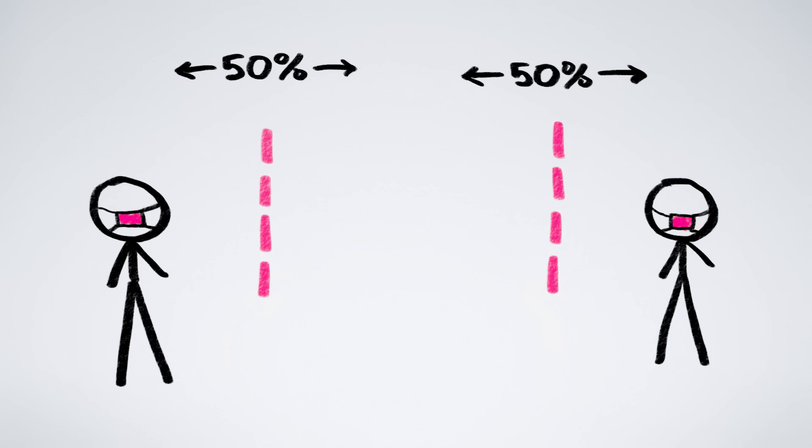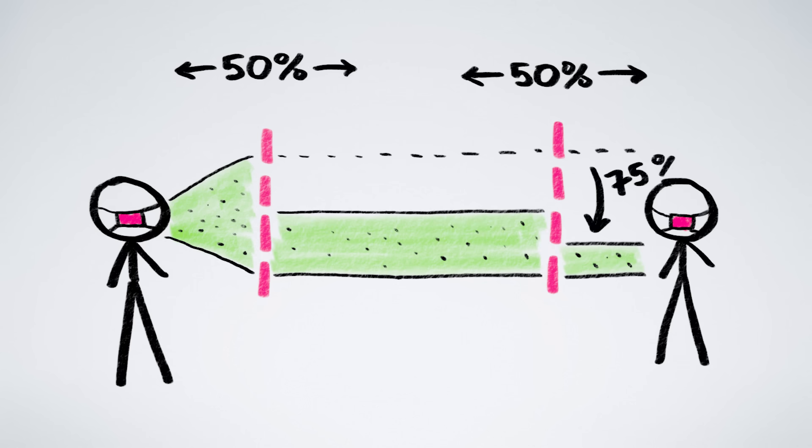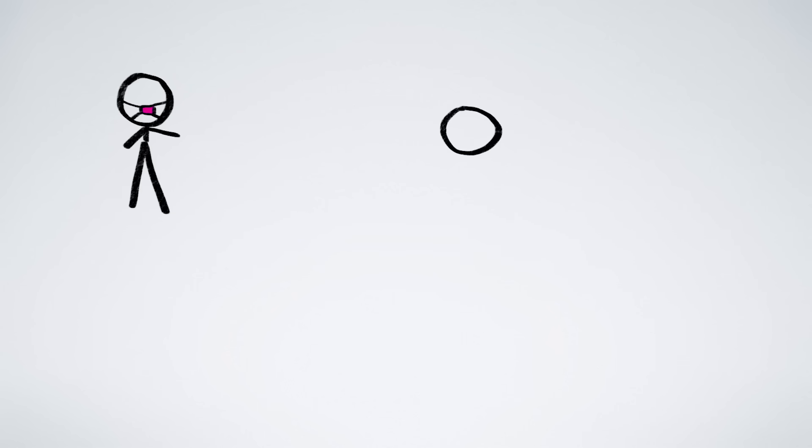If we assume for simplicity that masks are equally effective in either direction, and if this assumption bothers you, stick around to the end of the video. If masks are equally effective in either direction, then the first mask cuts disease transmission in half, and the second mask cuts it in half again. So overall, you end up with a 75% drop in disease transmission, not 50%. In this scenario, masks do double duty.